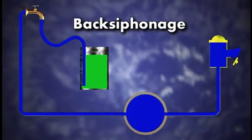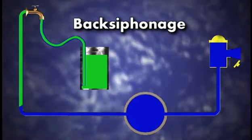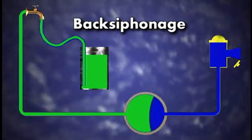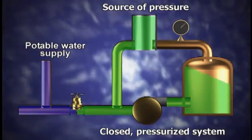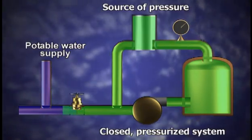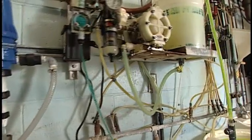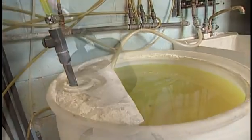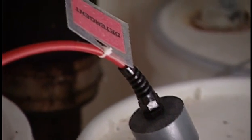Back siphonage is caused by negative or reduced pressure in a water system and occurs during low-pressure events such as a line leak. Back pressure is caused when a potable water system is connected to a non-potable supply operating under higher pressure that pushes contaminated liquid back into the public water system, meaning non-drinkable water or other fluids can accidentally get into your drinking water system when a pressure difference forces unwanted liquids into clean drinking water lines.